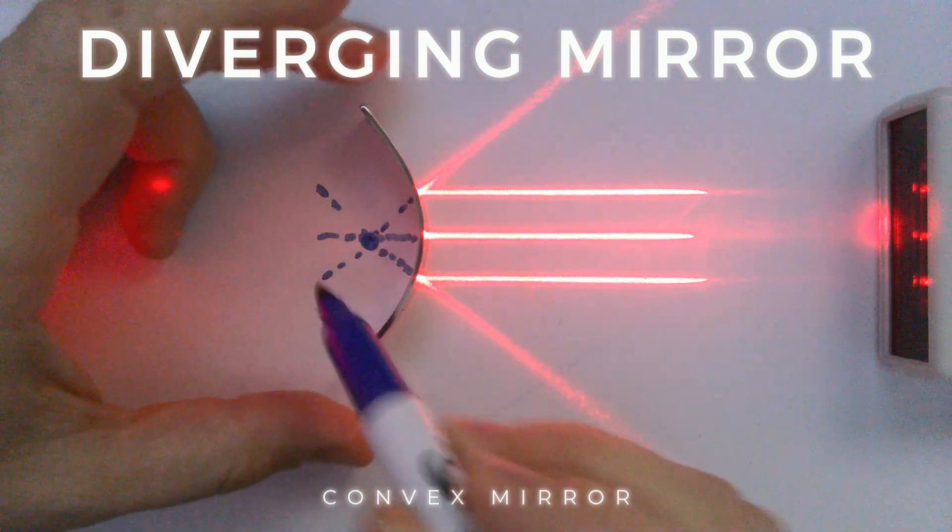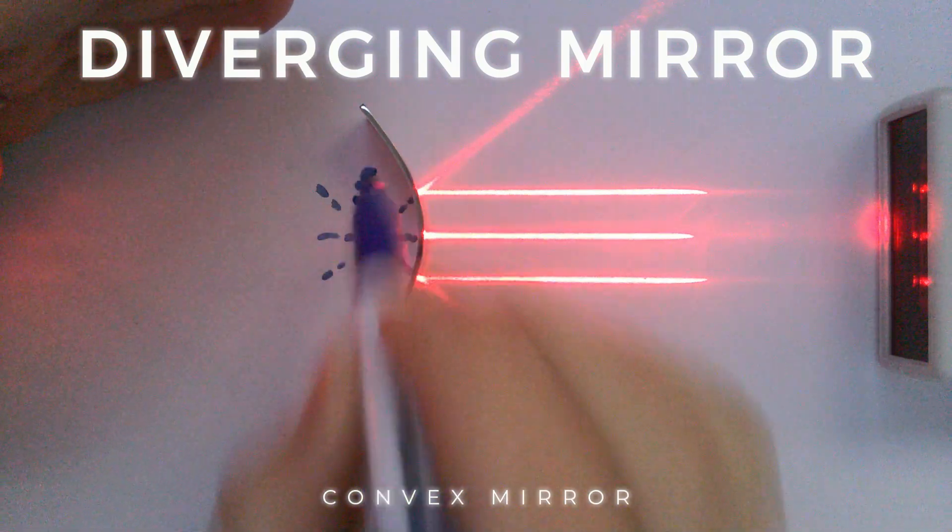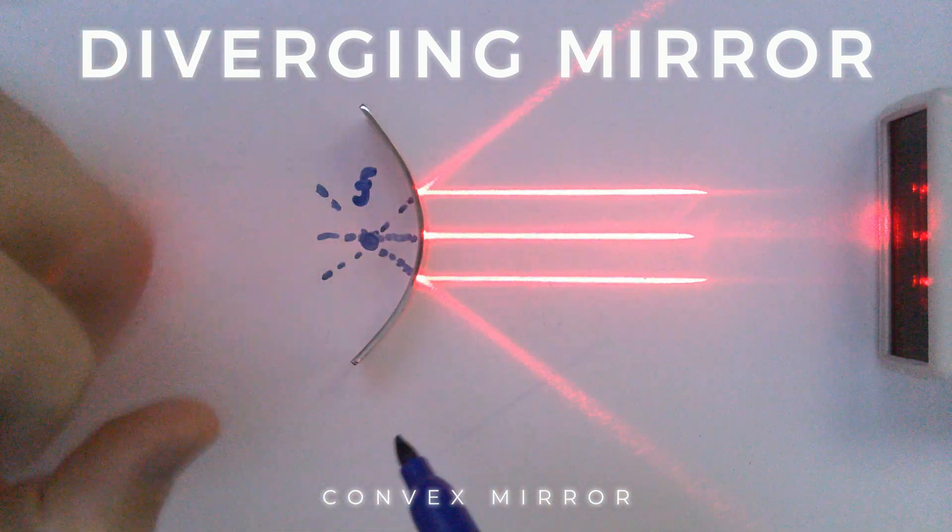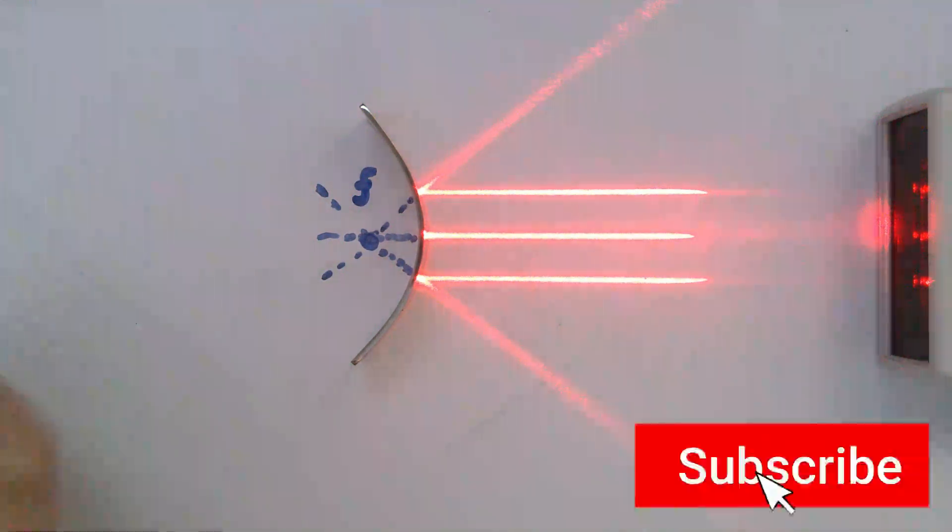And that means the focal length of a convex mirror is always behind it. When we're doing this mathematically, we'll always make sure to use f as a negative value to signify that the focal length is behind the mirror.